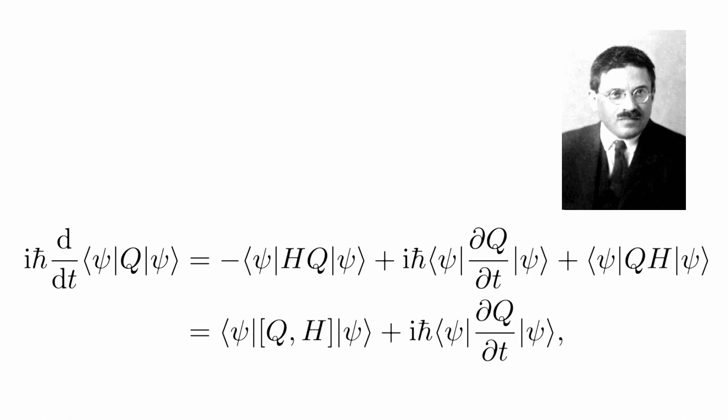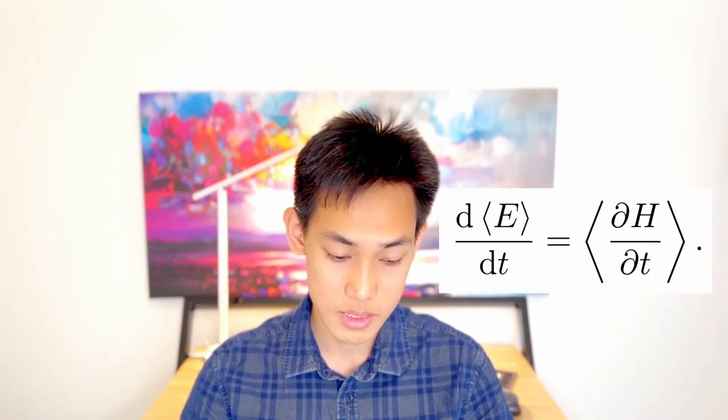In consequence, if the operator Q commutes with the Hamiltonian — meaning the order of operation yields the same result — then Q is a conserved quantity. For example, if Q is the Hamiltonian, then the Hamiltonian commutes with itself, so energy is a conserved quantity. We have just derived the conservation of energy from quantum mechanics, provided that the Hamiltonian is time-independent, meaning the system is isolated, since time dependence of the Hamiltonian arises only when some external force is present. This is also why the states of well-defined energy are called stationary states.